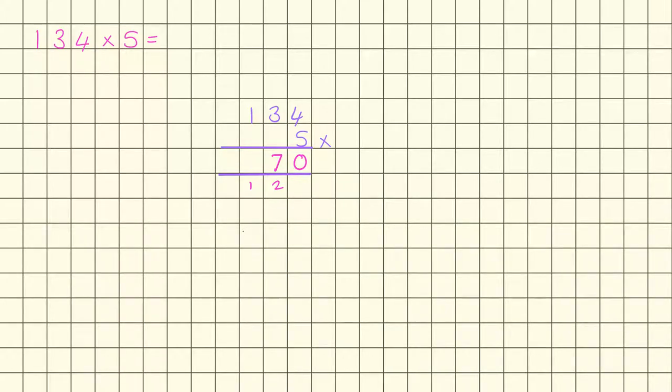100 times by 5 is going to be 500, plus the 100 that we've regrouped gives us 600, so we end up with a total of 670.